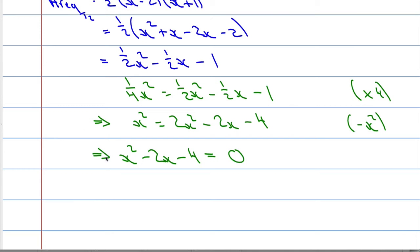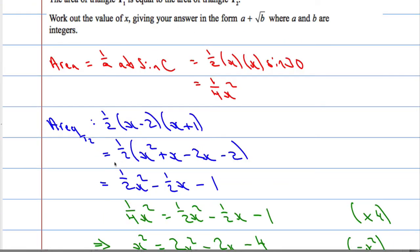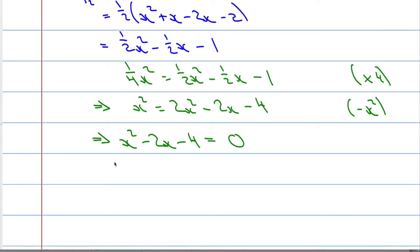There's a couple of ways we can go about this. I need to solve this equation. We are asked to work out the value of x, giving our answer in the form a plus root b. I could use the quadratic formula or complete the square. I think what I'm going to do here is the quadratic formula. So a is going to equal 1, b will equal negative 2, c will equal negative 4.